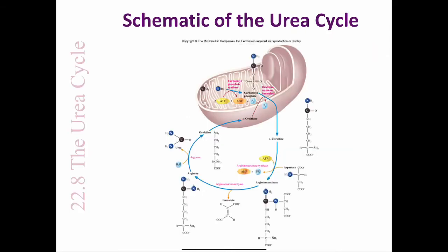The urea cycle converts ammonium ions into urea, which is less toxic. The intracellular locations of the reactions are indicated. Citrulline, formed in the reaction between ornithine and carbamoyl phosphate, is transported out of the mitochondrion and into the cytoplasm. Ornithine, a substrate for the formation of citrulline, is transported from the cytoplasm into the mitochondrion.